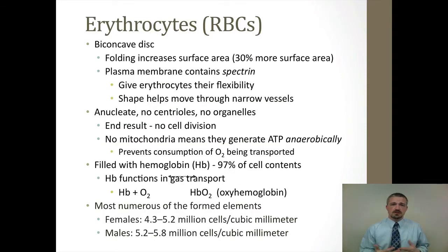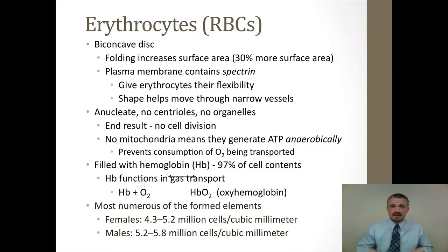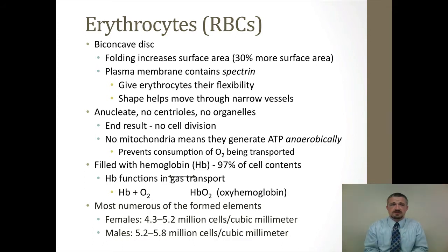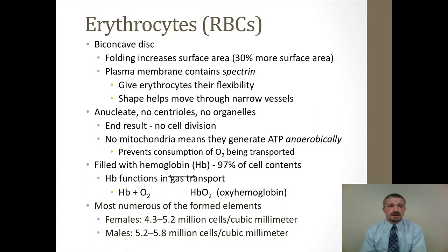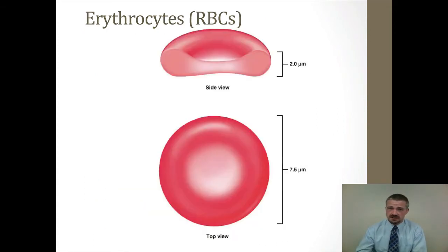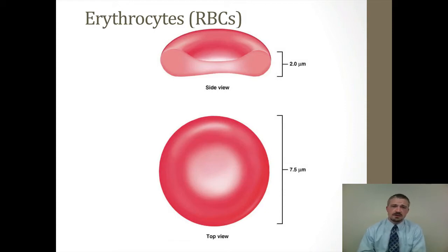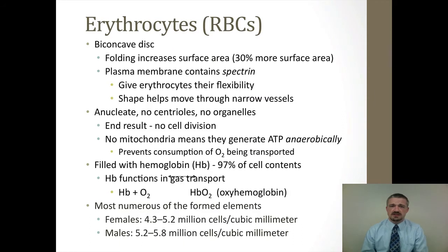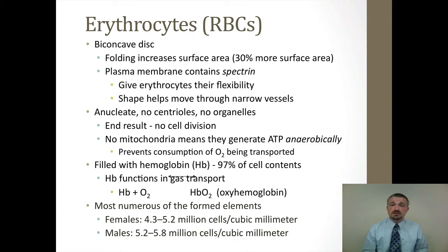So erythrocytes, or red blood cells - what are we looking at here? Well, we are looking at cells that are really tire-shaped. They have that kind of outer bulge at the top, it will narrow in the center and then bulge back out. It's what we call a biconcave disc. You can see it kind of goes in in the center and back out. One of the things that this shape allows the cell to do is to actually increase the surface area. The fact that it kind of indents back in is going to increase the surface area.